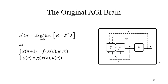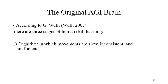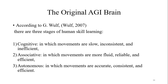In the beginning, the artificial agent omega has no information about the state space equations governing the world gamma, so first it has to learn its surrounding world by gathering data in order to estimate these equations. The agent performs this learning process in three stages, similar to a human being. According to Wolff, there are three stages of human skill learning: the cognitive stage, in which movements are slow, inconsistent and inefficient; the associative stage, in which movements are more fluid, reliable and efficient; and the autonomous stage, in which movements are accurate, consistent and efficient. In AGI Brain, we call these three stages infancy, decision-making, and expert stage.